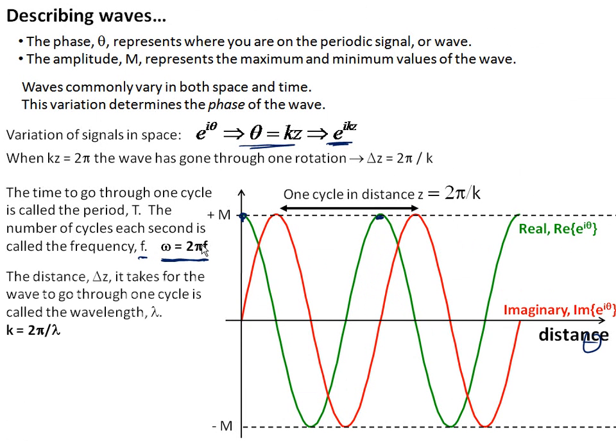Similarly, the distance it takes for the wave to go through one cycle is called the wavelength. We use the Greek letter lambda for that, and that's measured in meters. So one wavelength might be from this point on the wave to this point on the wave.